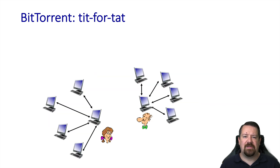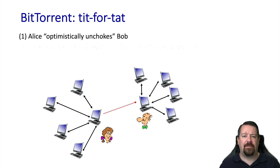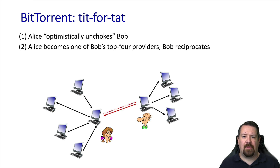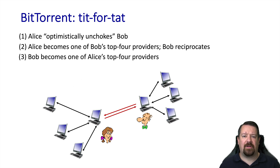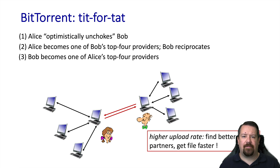Let's see an example of this tit-for-tat process. Bob is asking for chunks, but he doesn't have any to upload, or maybe he just doesn't have any that Alice needs. In either case, Alice randomly picks Bob and optimistically unchokes him, meaning she begins sending him one of the chunks that he still needs. At this point, Bob recomputes his top four providers and Alice is one of them, so Bob reciprocates by sending Alice a chunk. It turns out that Alice and Bob are well connected, so Bob is now one of Alice's top four providers as well, and they both benefit by getting chunks of the file faster. This improves overall peer-to-peer network efficiency by having peers that are well connected to one another exchange more chunks with each other.